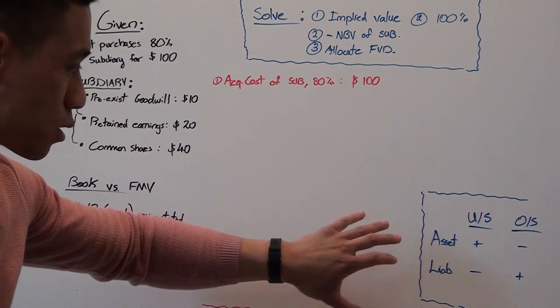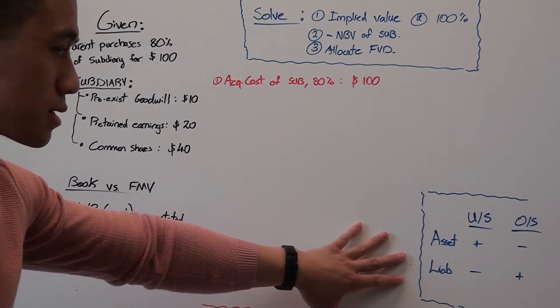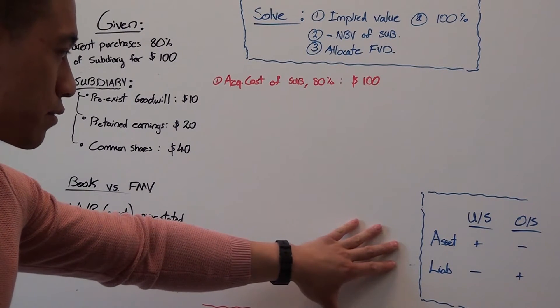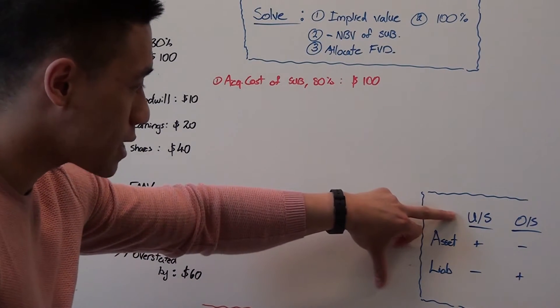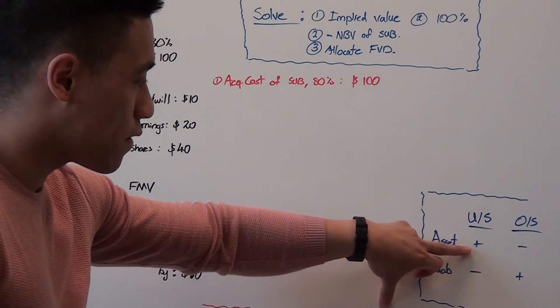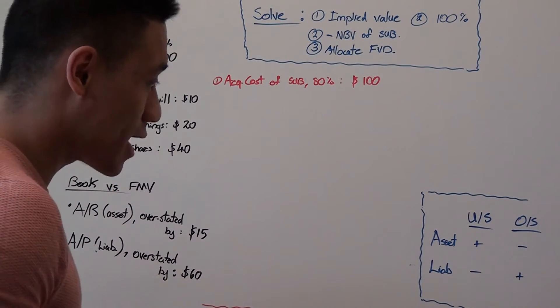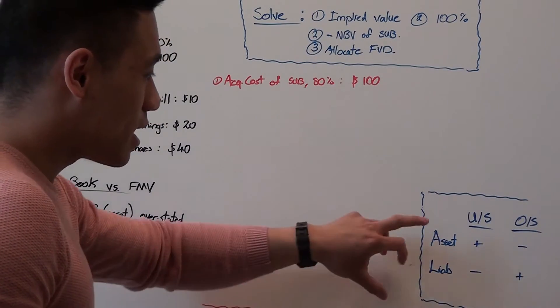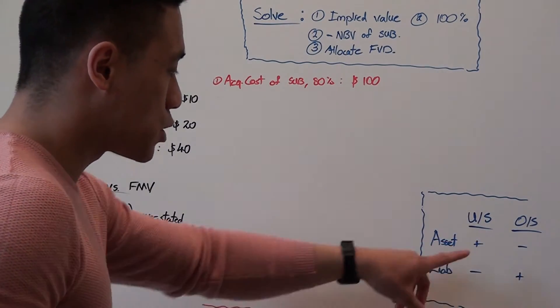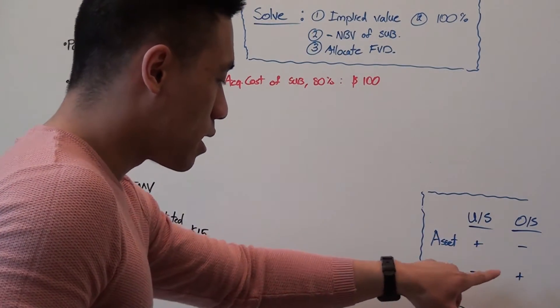You can create a quick cheat table to know the signs for allocating your fair value differences. The acronym is USA and then followed by a plus sign because the USA flag has stars in its flag, and then all the other signs are opposite to each other. So plus, minus, minus, plus.